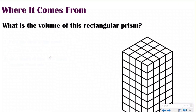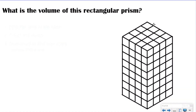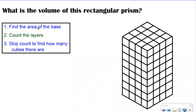So where does our volume formula come from? We want to understand this first before we talk about what it actually is. Yesterday we did questions like this — we had to figure out what the volume of a rectangular prism was by counting the unit cubes that made it up. We used our steps: find the area of the base. Since we can't see the area of the base, we look at the area of the top, and we get 4, 8, 12, 16 — which means each layer has 16.